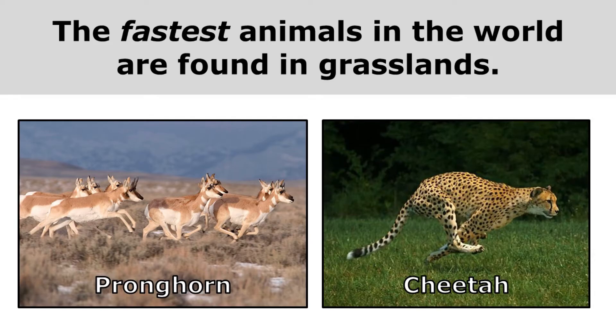Like the pronghorn and the cheetah. Because there are few places to hide in a grassland, animals have to be able to run from their predators, and the predators have to be able to chase their prey.